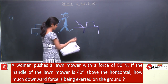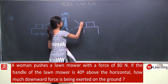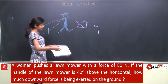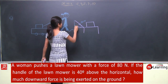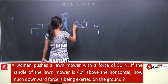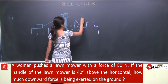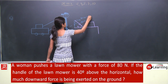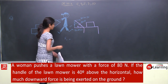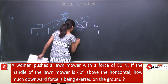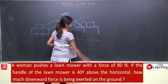This angle is given to be 40 degrees and the force of 80 newton is applied. So you need to find ki vertically downward kitna force exert ho raha hai. Since the handle is 40° above horizontal, the angle from vertical is 50°. So the vertical downward component is 80·cos 50°, and horizontal is 80·sin 50°. The force exerted vertically downward will be equal to 80·cos 50°, which comes out to be approximately 51.4 newton.